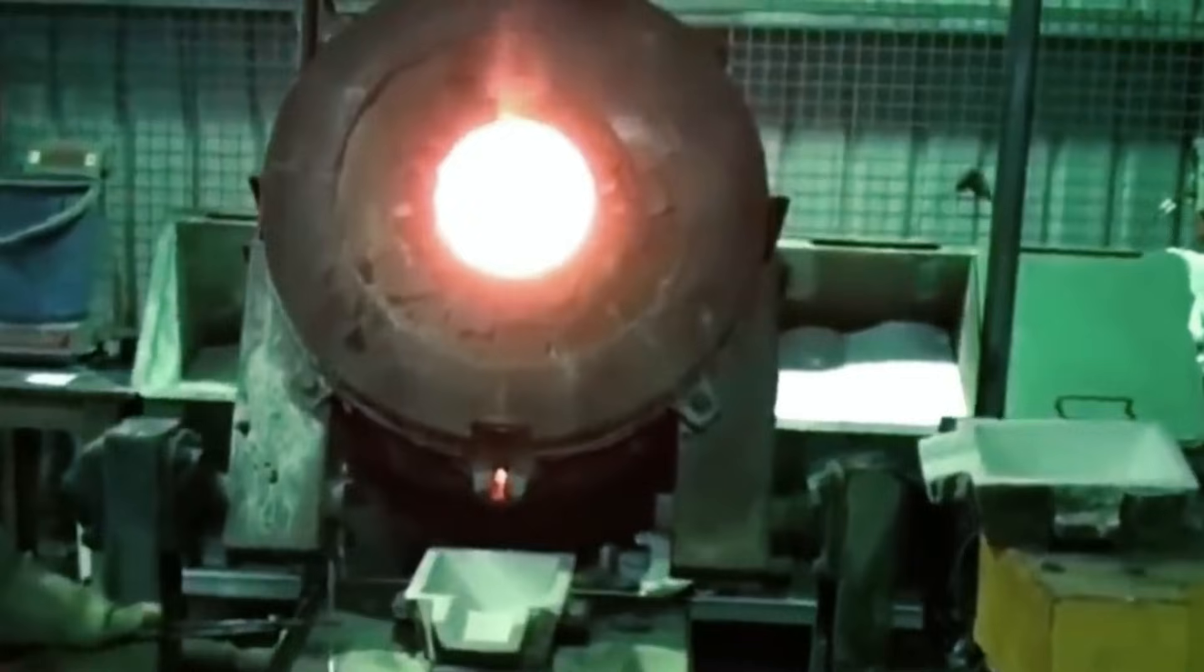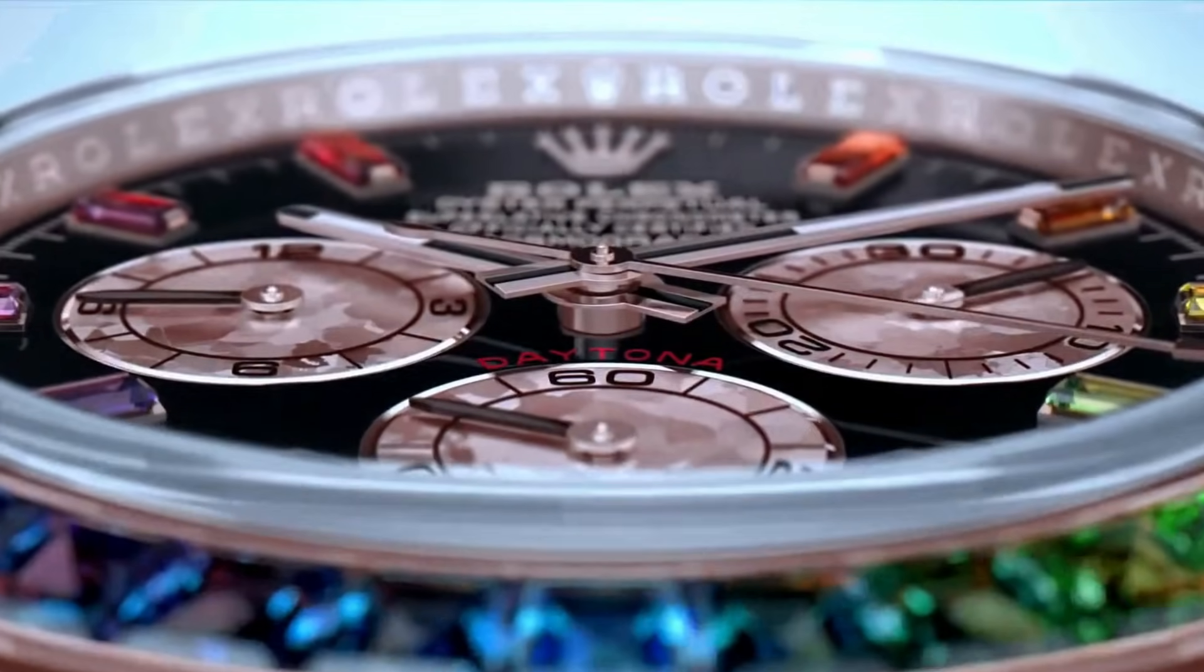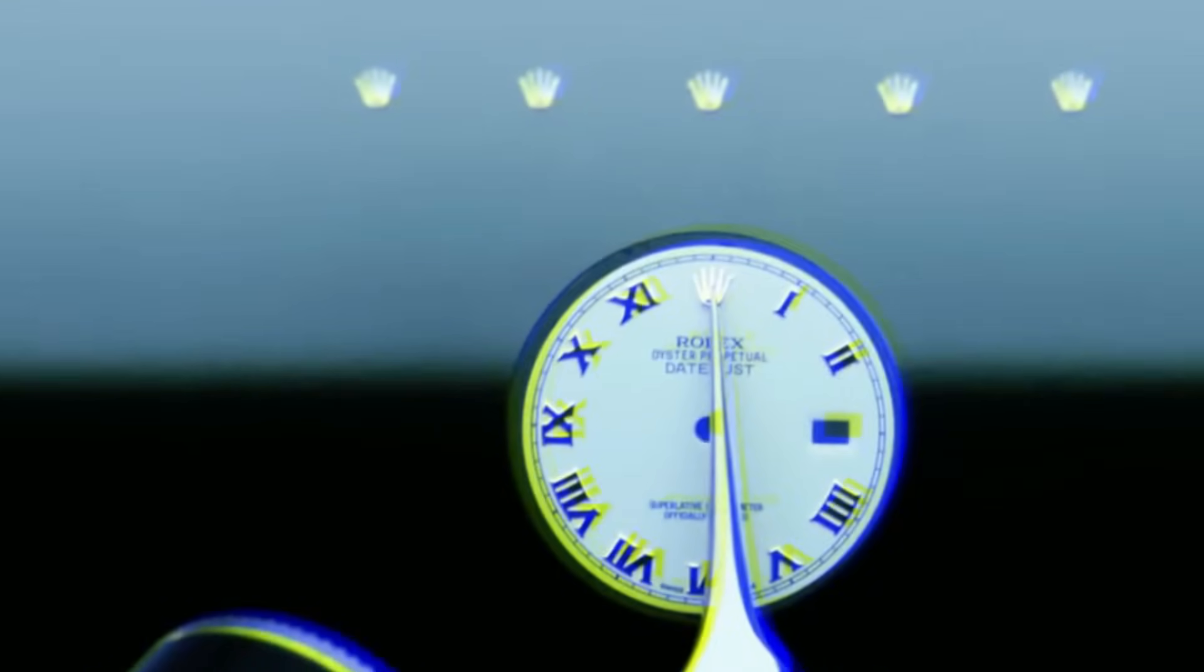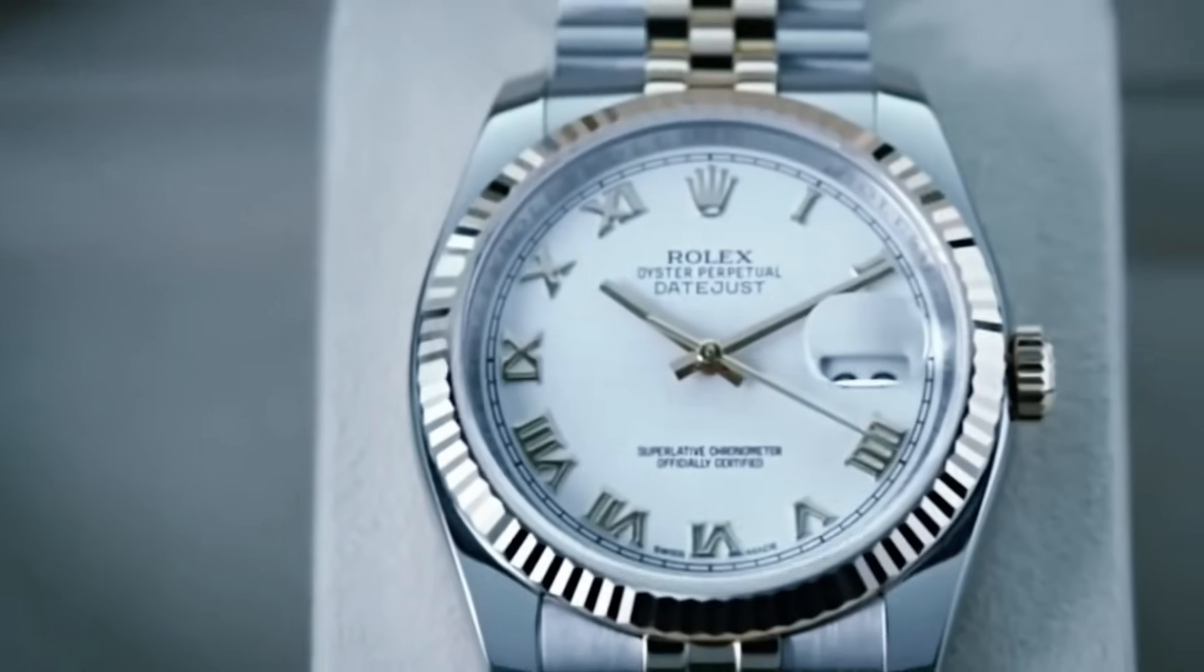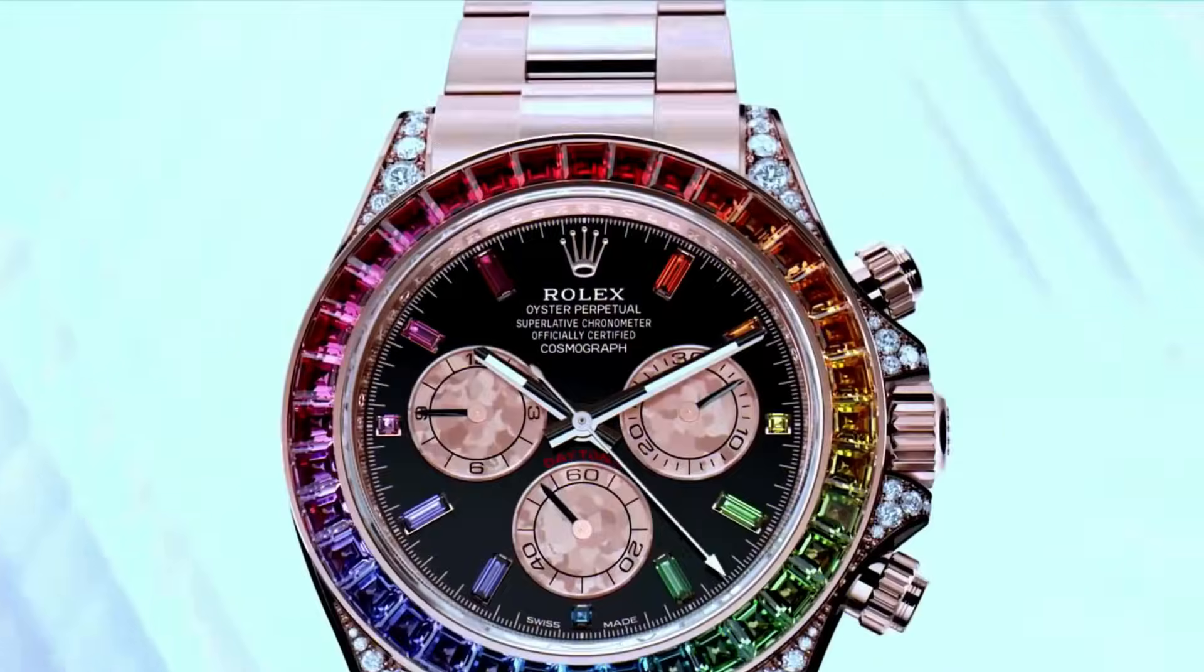These bars will later become the cases, bezels, and bracelets of their fancy watches. All these materials make Rolex watches super durable, but there's more to it. Oystersteel can take on a really nice shine when it's polished. When light hits a polished Rolex case or bracelet, it creates a unique sparkle that's easy to spot. From here, these raw materials start their journey to become the tiny, complex parts that make up a Rolex watch.